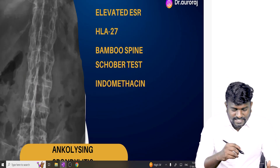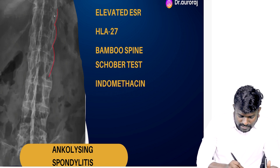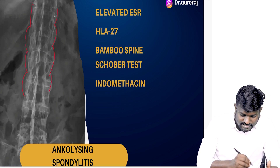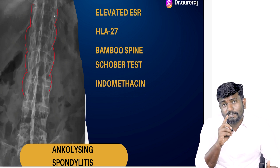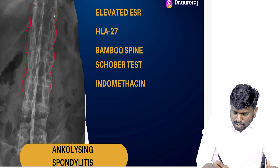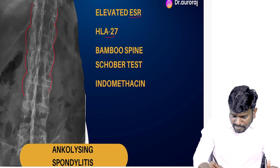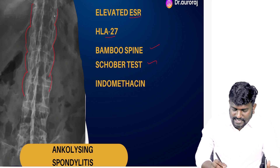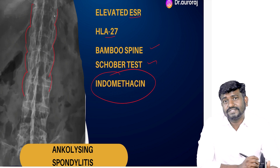The moment you see an image in the exam having bamboo spine, it is ankylosing spondylitis. For clinical orientation, remember it has elevated ESR. It is an autoimmune disease having HLA-B27. Bamboo spine is going to be seen and we are going to do the Schober test. Treatment is going to be indomethacin given to the patient.